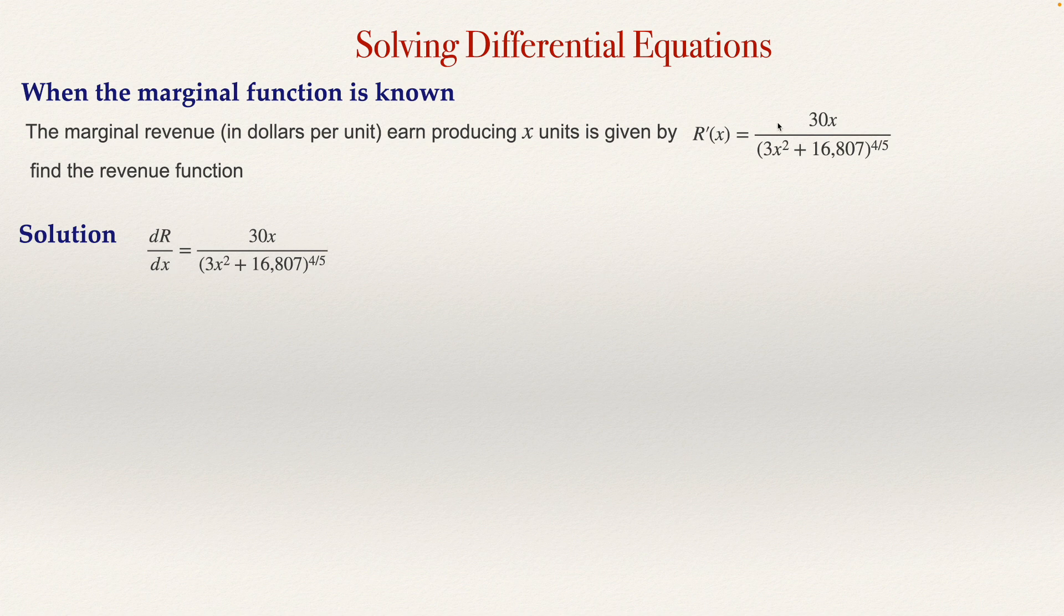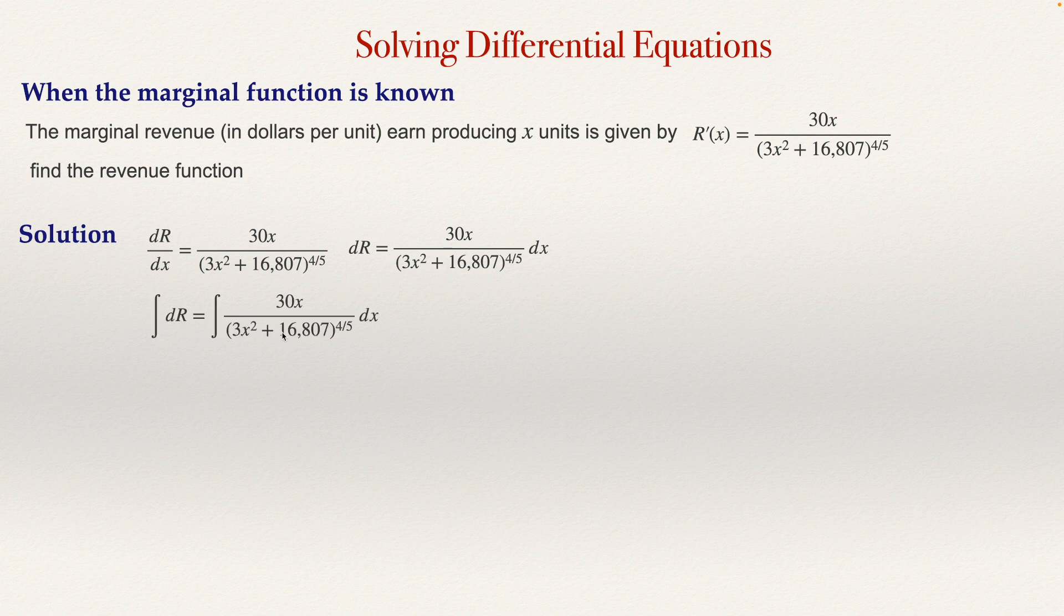I just type the expression given in the question in this way, and now I'm just going to separate variables, so I can multiply by dx. So I can say dR, the differential of the revenue, equals 30x over (3x² + 16,807) to the power 4/5 dx, and then get the integral on both sides. If I get the integral on both sides, this obviously is the revenue, and this will be the integral of this.